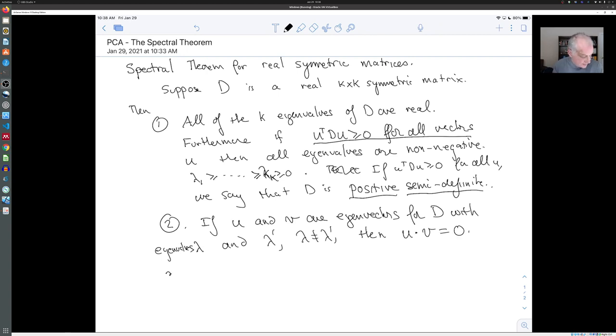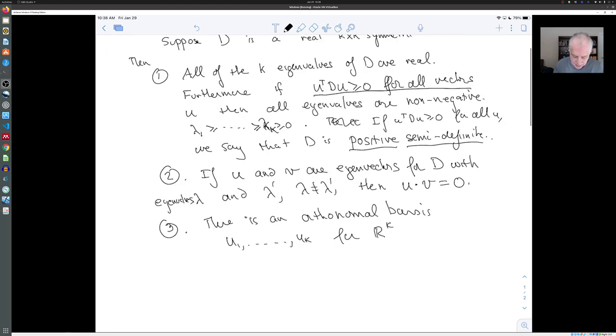Third, there is an orthonormal basis u1 up to uk for Rk consisting of eigenvectors of D with eigenvalues lambda one up to lambda k.